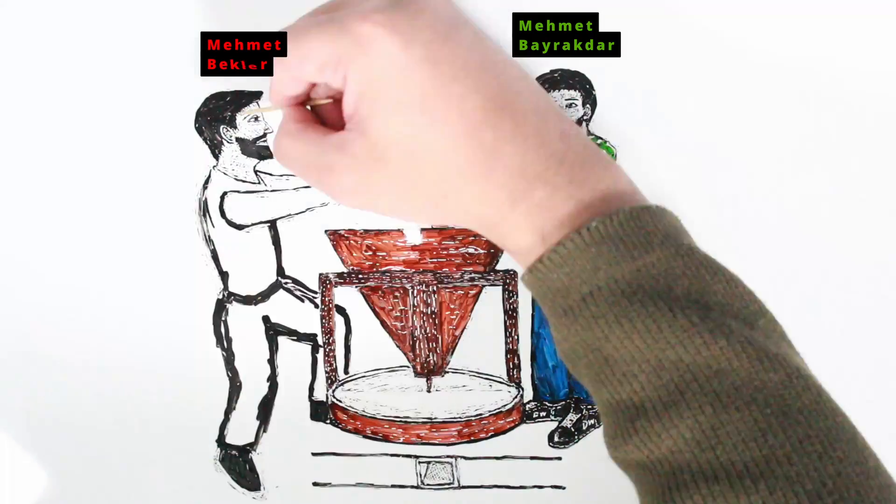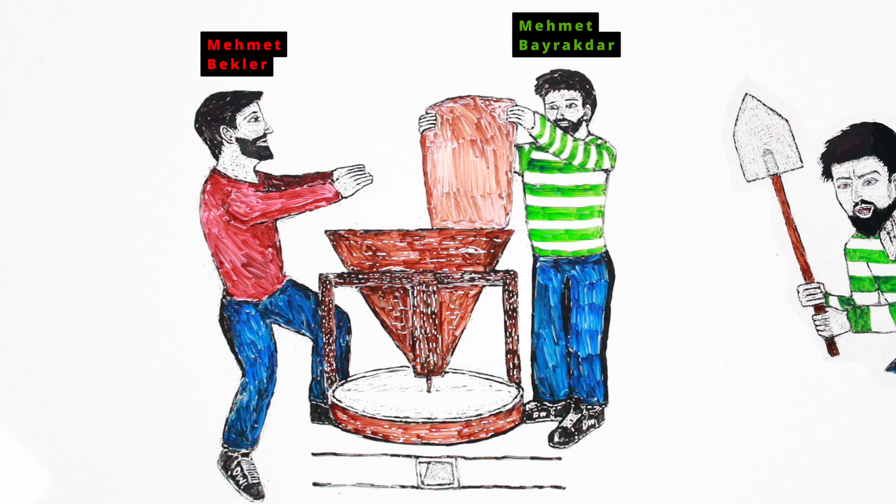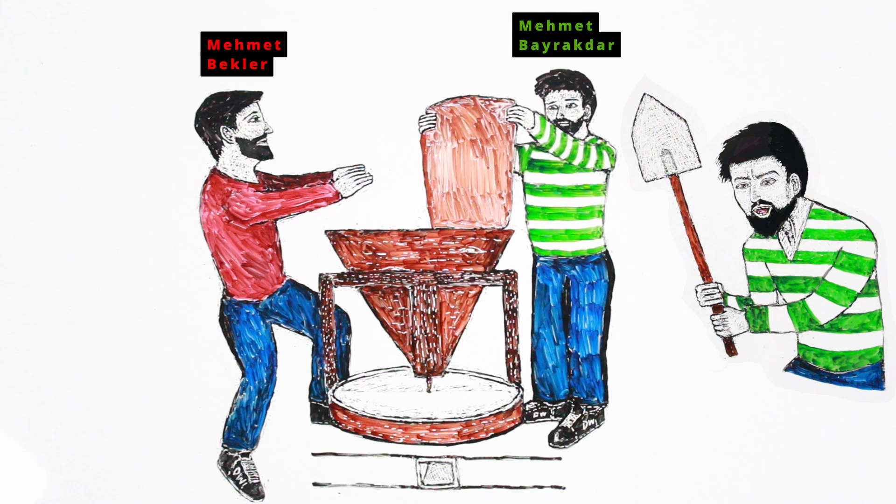Mehmet Bekler stopped the mill. This made Bayraktar angry. Bayraktar picked up a flour shovel and hit Bekler in the back of the head. Sadly, Bekler died from this injury.